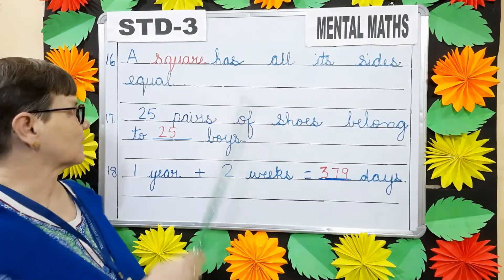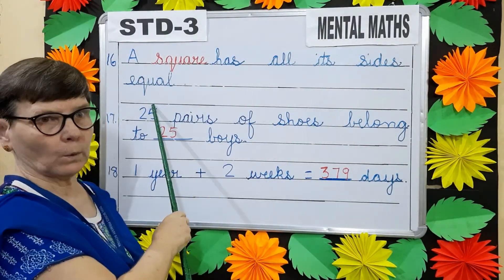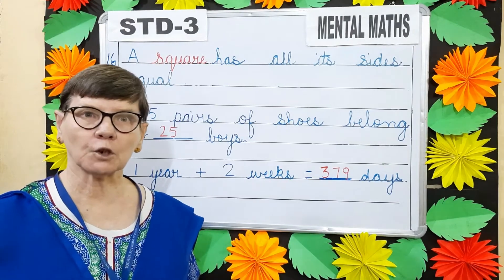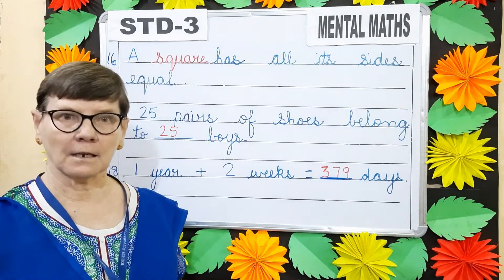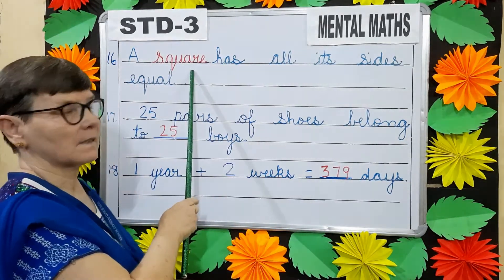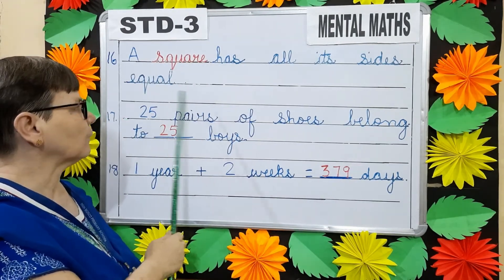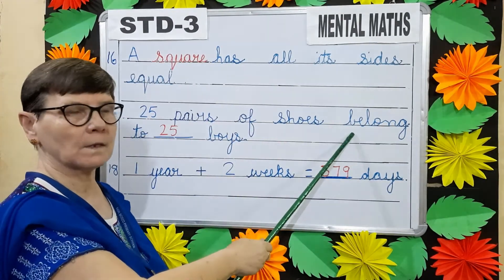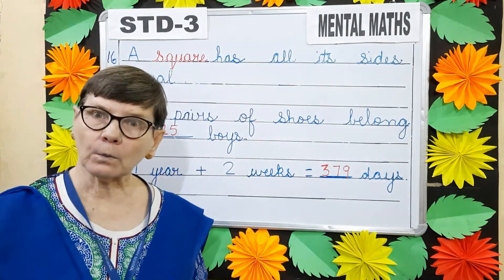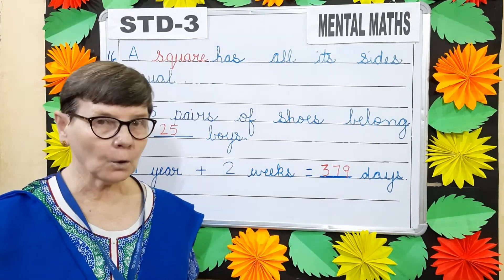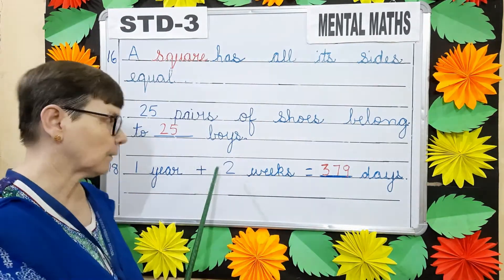Question number 16: A dash has all its sides equal. Name the figure which has all its sides equal. Yes — it's a square, so we write square. Question number 17: 25 pairs of shoes belong to dash boys. One boy will wear one pair of shoes, so 25 pairs of shoes belong to 25 boys.